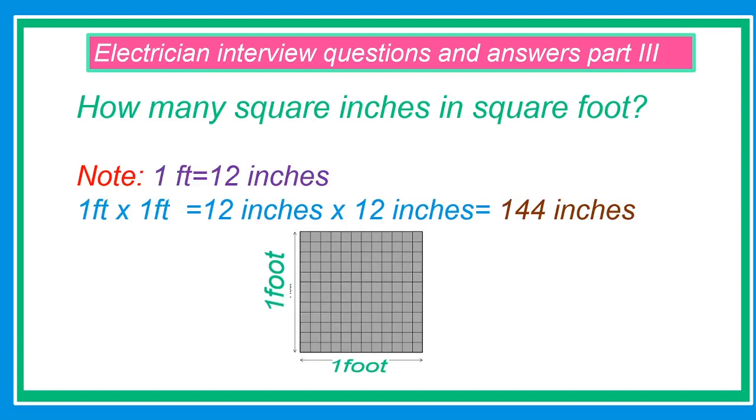How many square inches in a square foot? Note that 1 foot equals 12 inches, or 1 square foot equals 12 square inches. 1 foot times 1 foot also equals 12 inches times 12 inches, which equals 144 square inches.